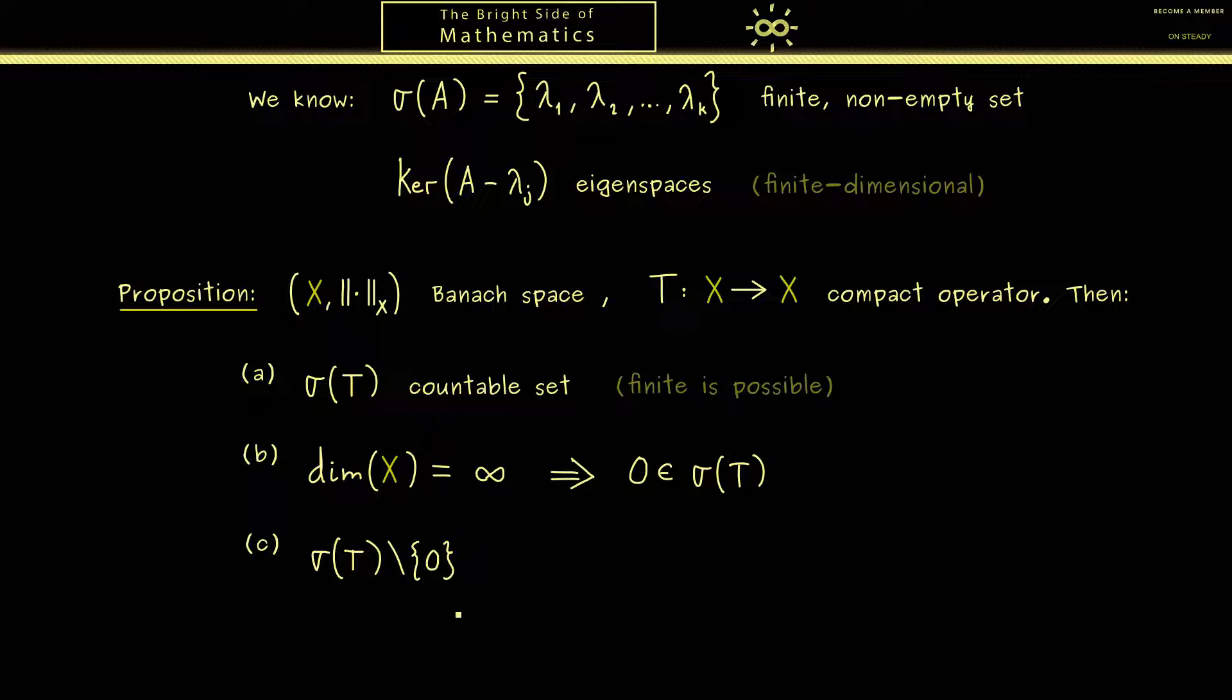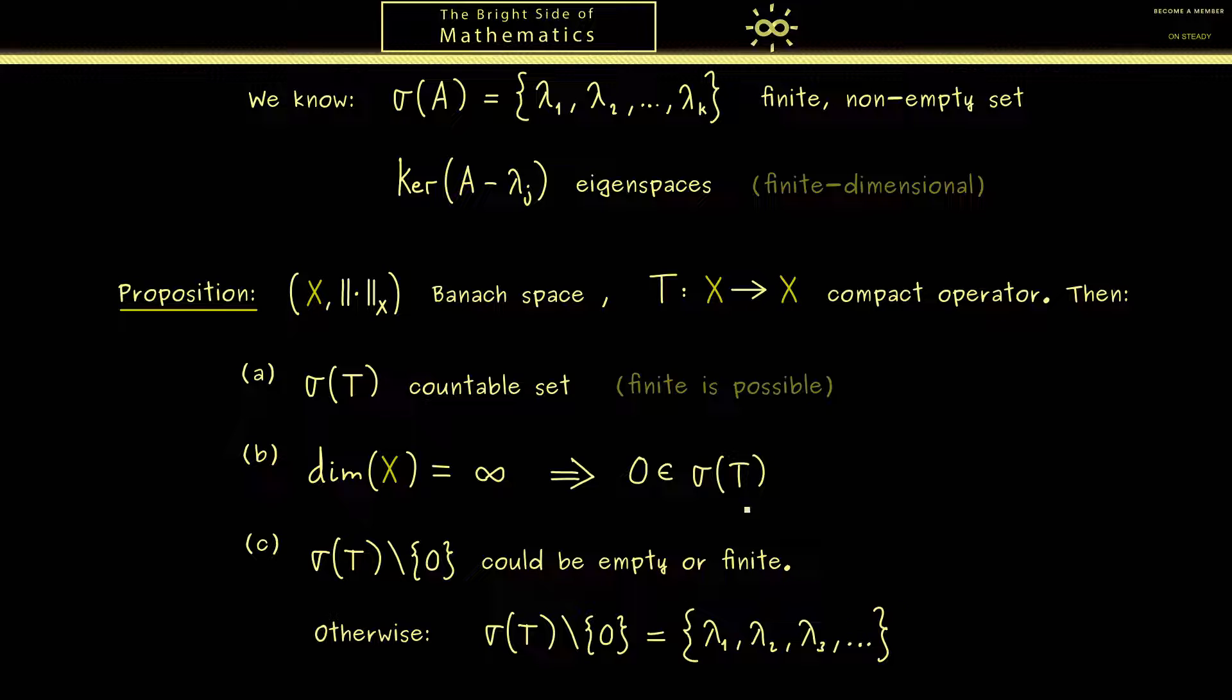Now of course, this is still a countable set, but now this one could be empty. However, it could also be a countable infinite set, which means it could be written as a sequence of values lambda. But, similarly to the finite case here, it does not happen that this infinite case here has an accumulation point. More precisely, this means, if you form the closure of this set in C, the only point that could join is this 0 here. In other words, you could say the sequence lambda_k converges to 0.